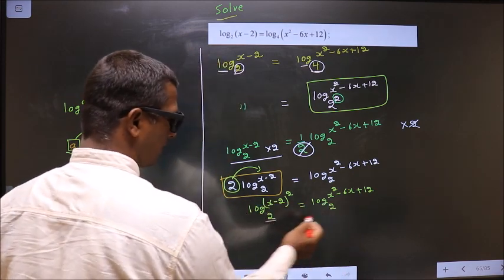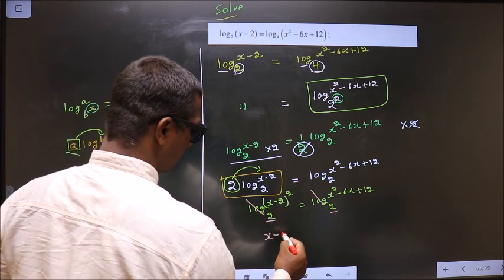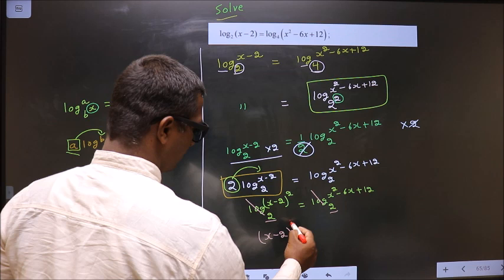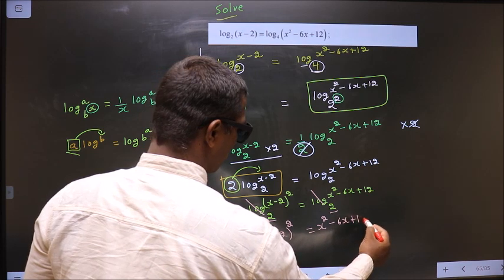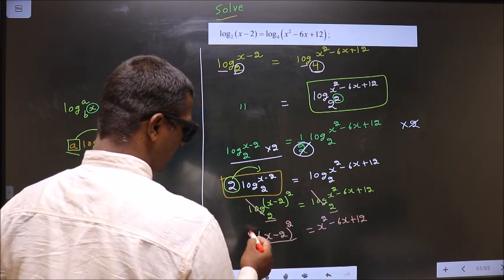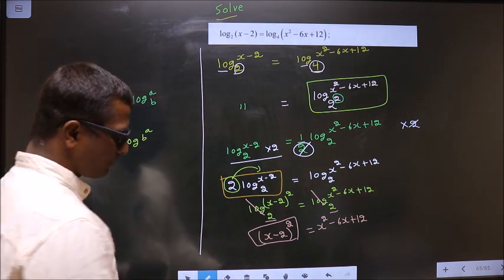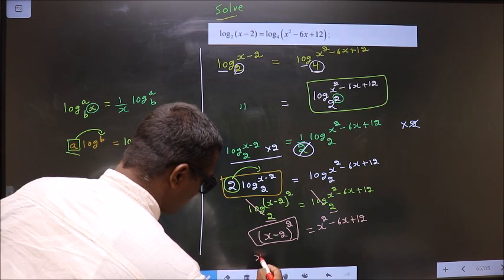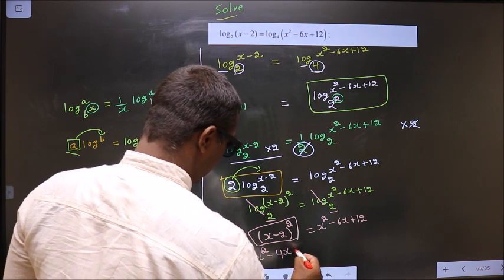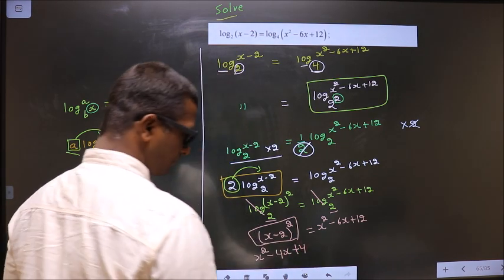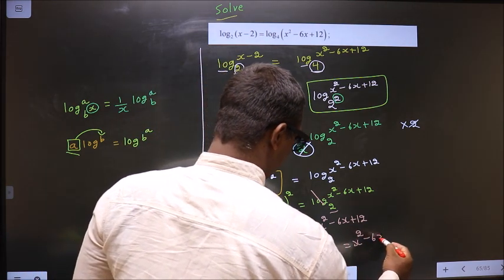Now we have the same base on both sides, so we cancel the logs. We are left with (x minus 2) whole squared equal to x squared minus 6x plus 12. Opening up using the formula (a minus b)² gives x squared minus 4x plus 4 equal to x squared minus 6x plus 12.